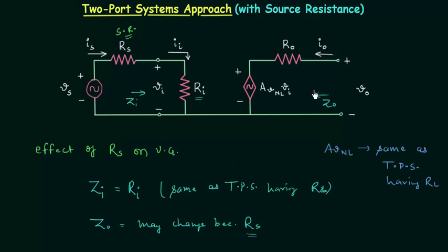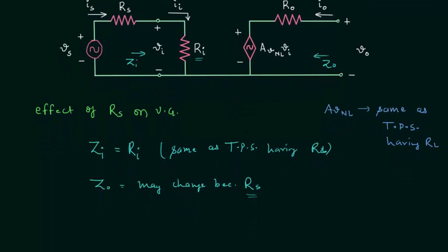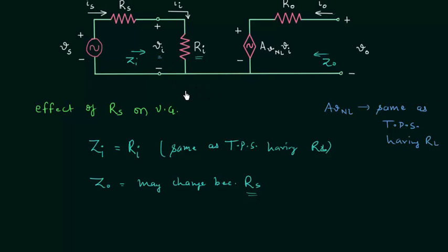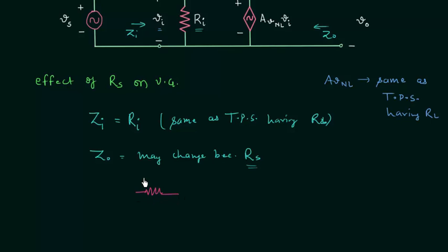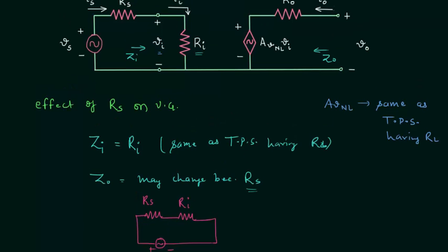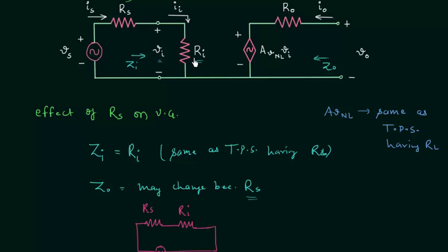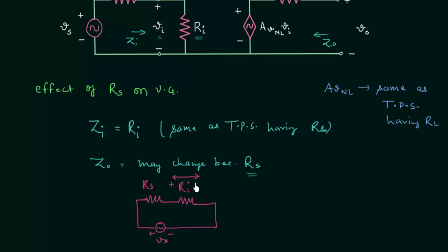Now we will find out the voltage gain of this two-port system. First we will calculate the input voltage VI, and to do that we will simply use the voltage divider rule. If you redraw the input circuit, you have resistance RS connected in series with resistance RI, with voltage source VS connected across them. The input voltage VI is the voltage across resistance RI.